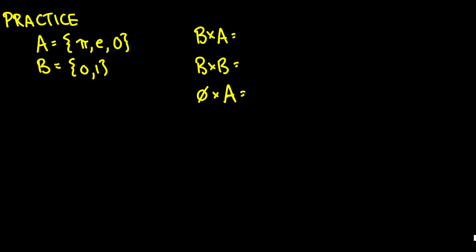Let's do some practice here just to see if you guys understand this. One thing we did here is we did B cross A, and this should be fairly straightforward because we're taking the cross product of two sets. We're just reversing the order. Instead of A cross B, it's B cross A. So the first element is going to be in B. So we have (0,π), we're going to have (0,e), and we're going to have (0,0) because we took these three pairs.